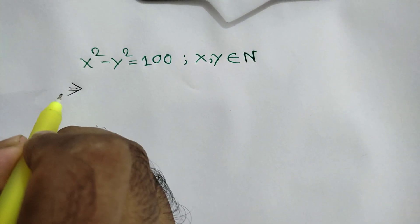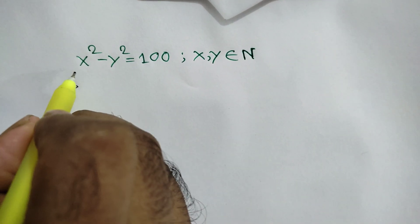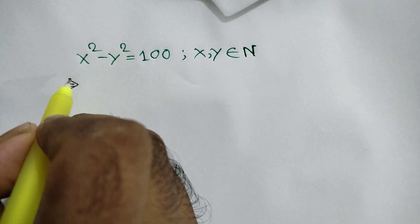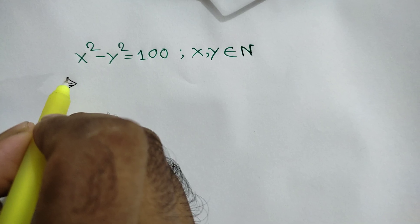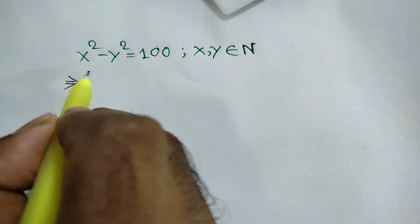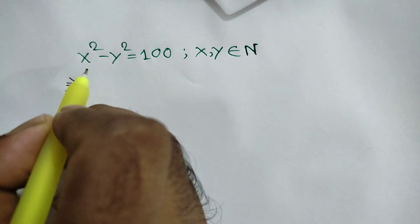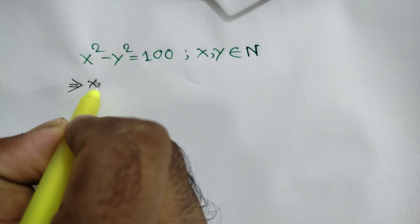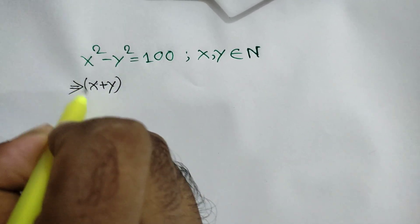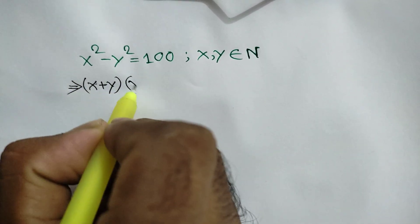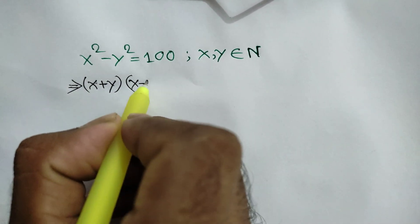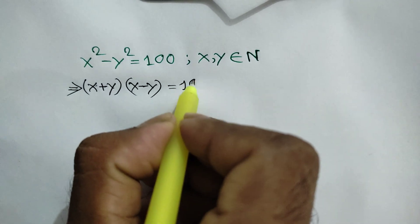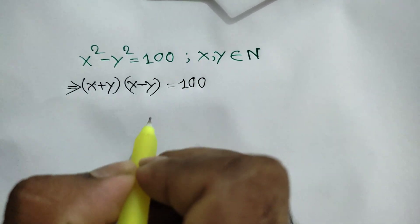We know the algebraic formula a squared minus b squared is equal to a plus b times a minus b. Applying this rule here, we can write x plus y times x minus y is equal to 100.